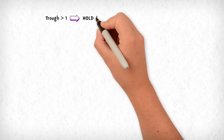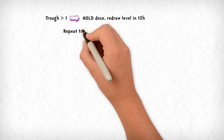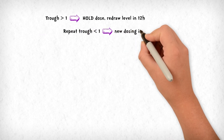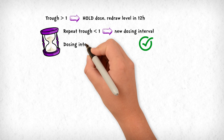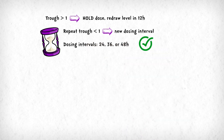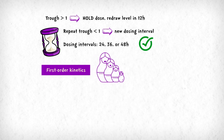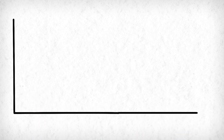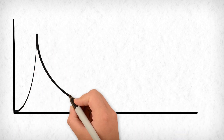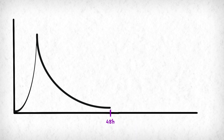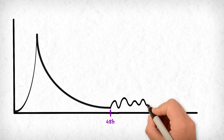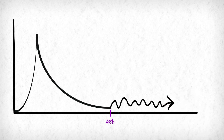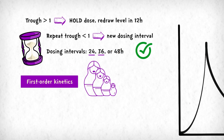If the trough is greater than 1, hold the dose and redraw the level in 12 hours. If the repeat trough is less than 1, this is your new dosing interval. Keep the dosing interval at 24, 36, or 48 hours. Gentamicin exhibits first-order kinetics, meaning a change in dose produces a proportional change in serum concentration and a constant proportion of drug is eliminated over time. Past a 48-hour interval, pharmacokinetics are no longer predictable, so the maximum interval for gentamicin is 48 hours, while we also maintain an extended interval of at least 24 hours.